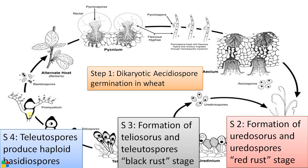From each cell of the teliospore, a promycelium emerges and the four haploid nuclei move into it. Cross walls then form, finally producing four basidiospores on a structure called the sterigma. Of these four basidiospores, two belong to the plus strain and two belong to the minus strain.